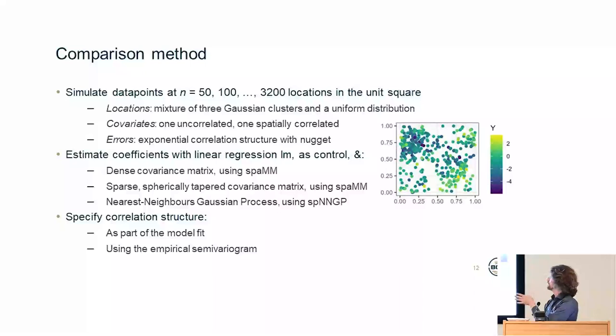I have covariates, I have a very simple exponential correlation structure, and I try to estimate the coefficients that generate this process using a linear model without any spatial correlation, using the standard approach with a dense covariance matrix, with a sparse fairly tapered covariance matrix, and with the nearest neighbors Gaussian process using various R libraries. For each of the latter two, I either specify the correlation structure within a maximum likelihood fit of the model, or using the empirical semivariogram beforehand.